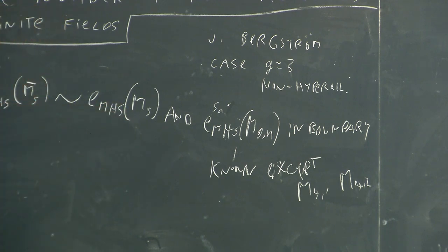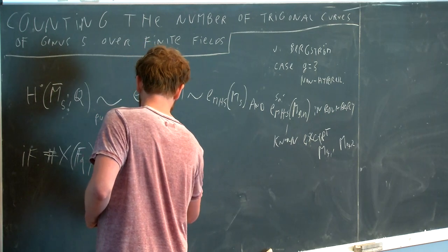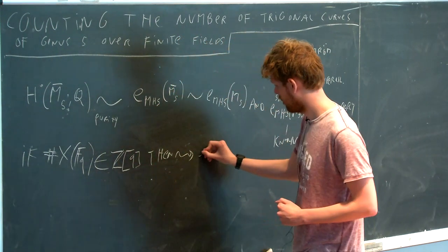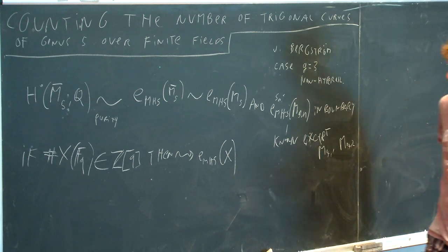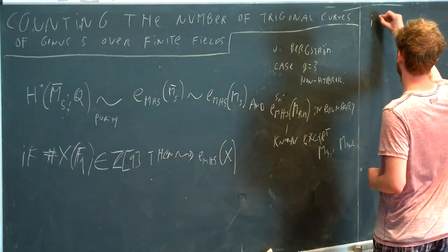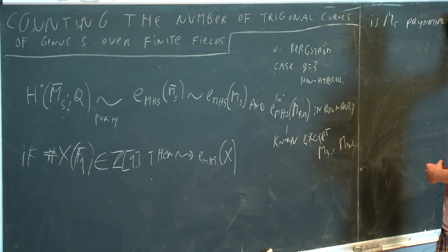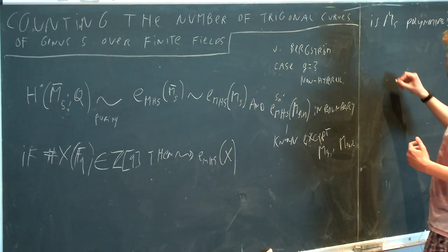The nice thing is that if the number of points of a space over a finite field is a polynomial with integer coefficients, then it gives the Hodge-Euler characteristic. The question is: is this true for M5? Is M5 polynomial? The answer is we do not know for sure. But we can also ask: is M5-bar polynomial? It turns out that this is the case if M5-bar only has Tate structure — the Tate structure that Ursula talked about today — because M5-bar is smooth and projective.